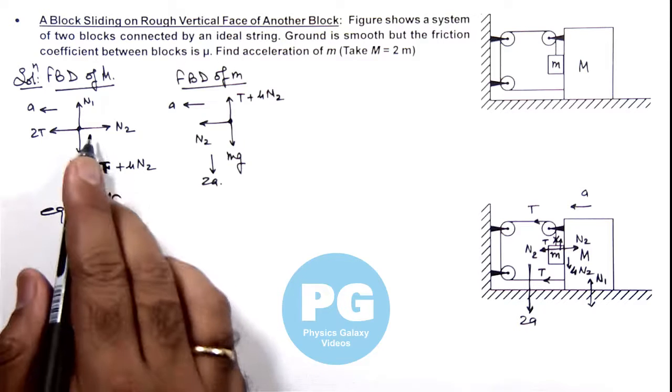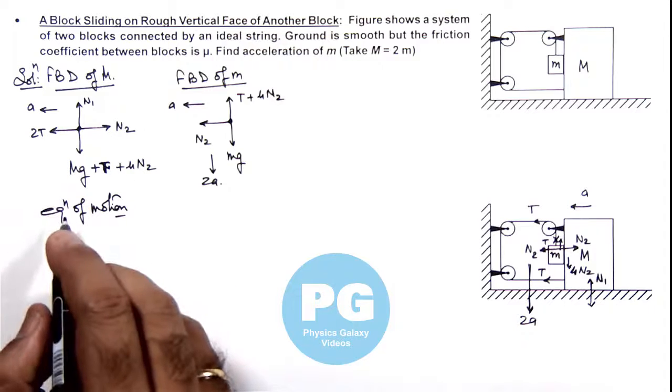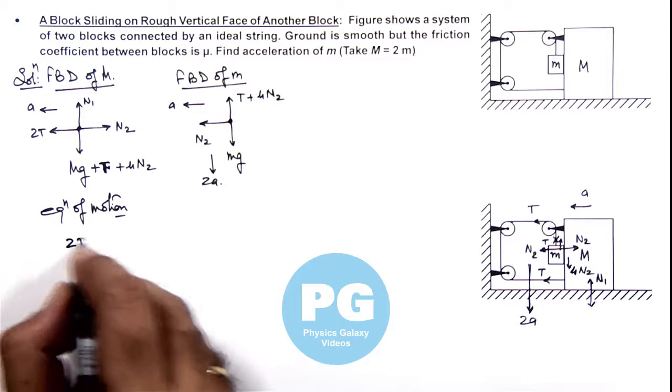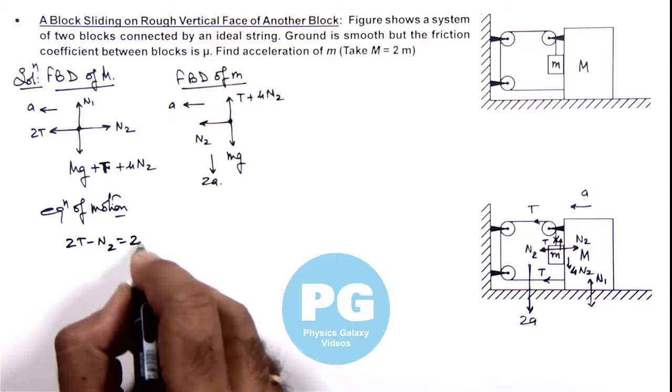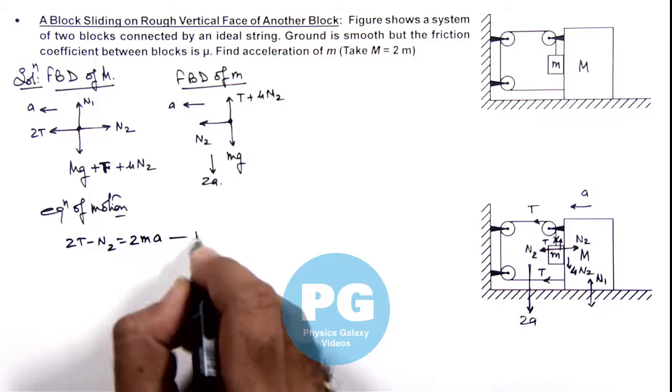For capital M here we can write the equation as 2T minus N2 is equal to its mass is 2m ay. Say this is our first equation.